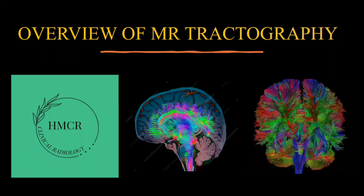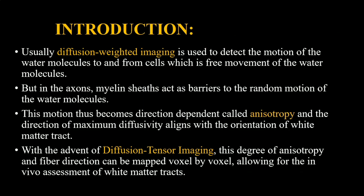Today we will learn about tractography — how it is acquired and how it is interpreted. Diffusion weighted imaging is used to detect the motion of water molecules, which is free movement, but in the axons the myelin sheath acts as a barrier to the random motion of water molecules. This motion thus becomes direction dependent, called anisotropy.